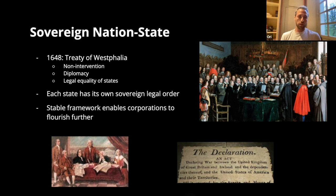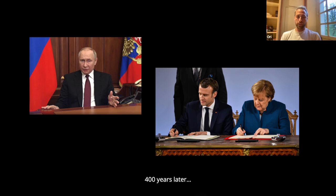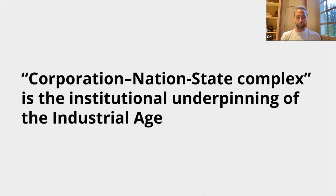Relations between states happen through diplomacy — heads of states sign treaties, declare war. We also have international bodies and a notion of international law, where states are considered legal persons. And today it's kind of the same deal: heads of state say a treaty has been broken and declare war on a country. Overall, we can think about this joint stock company/nation state complex as the key primitives that have driven the industrial age.